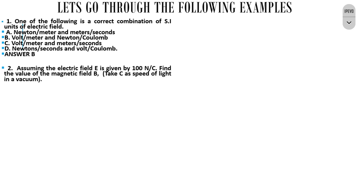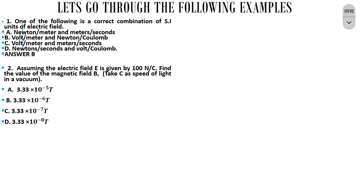Question 2. Assuming the electric field is given by 100 newton per coulomb, find the value of the magnetic field. Take C to be the speed of light in vacuum, which is 3 times 10 to the power of 8 meters per second. When you pick the correct expression and simplify it, you get option C as the correct answer.